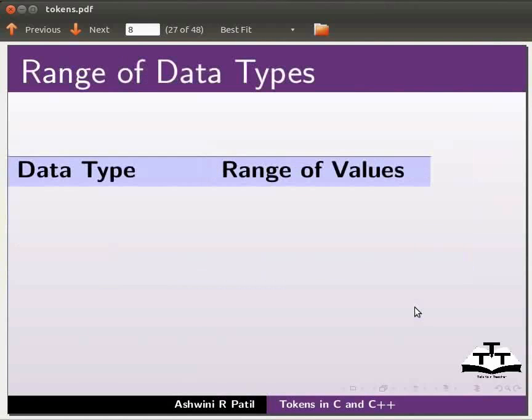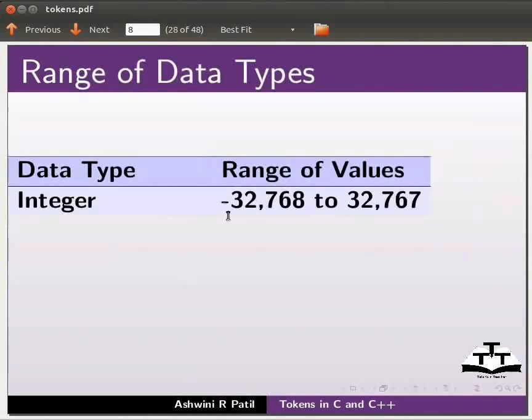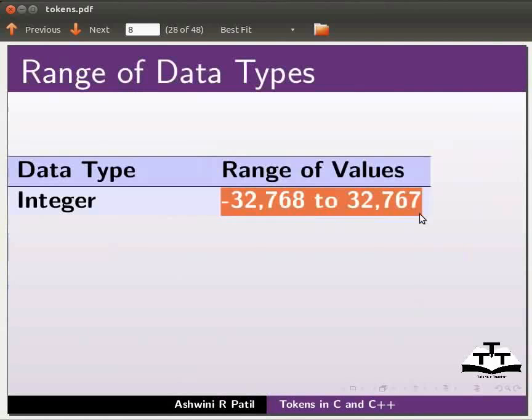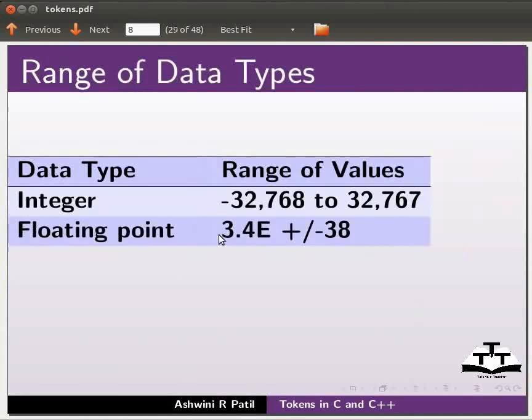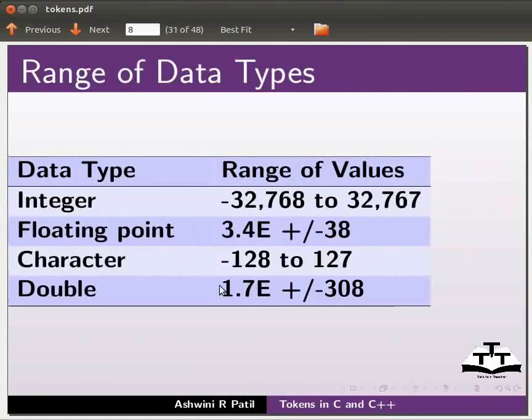Now, we will see the range of data types. The integer data type has a range of this. The floating point has a range of this. Character has a range of this. And double has a range of this. The values stored in the variable must not be greater or less than this range.